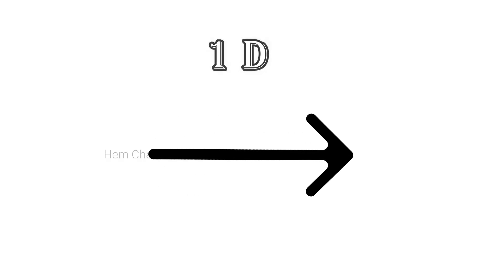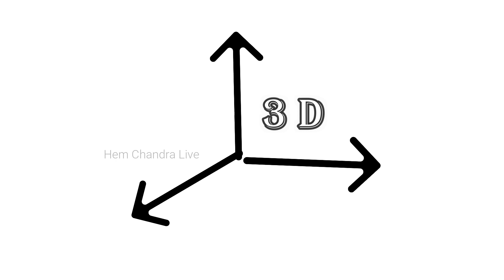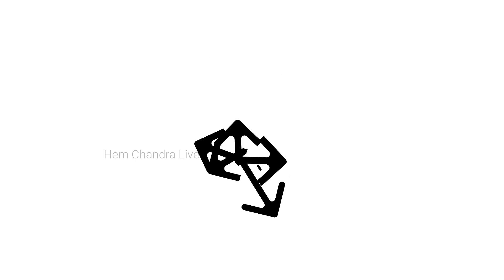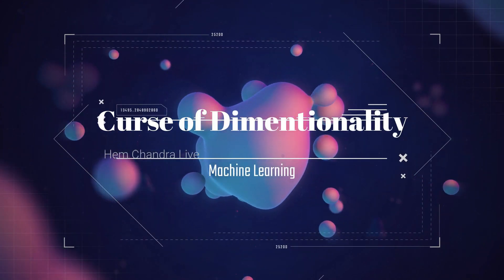Human eyes are capable of visualizing objects in one dimension and two dimensions. However, three-dimensional visualization is not as straightforward, and visualization of objects in four dimensions, five dimensions, and n dimensions becomes increasingly difficult. The curse of dimensionality is that